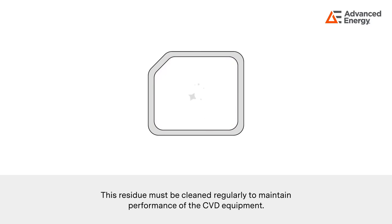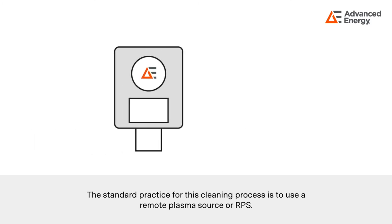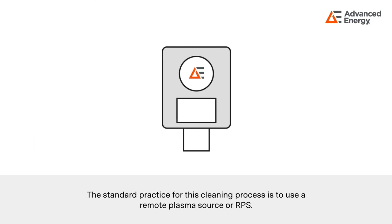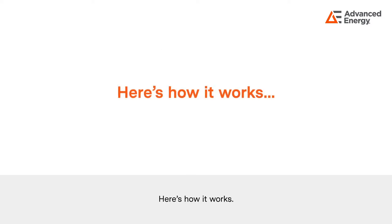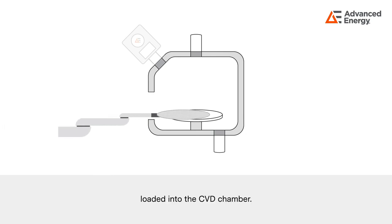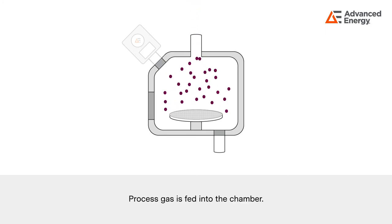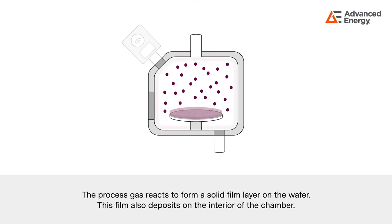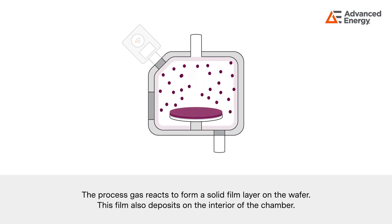This residue must be cleaned regularly to maintain performance of the CVD equipment. The standard practice for this cleaning process is to use a remote plasma source, or RPS. The semiconductor wafer is loaded into the CVD chamber and process gas is fed into the chamber, which reacts to form a solid film layer on the wafer.